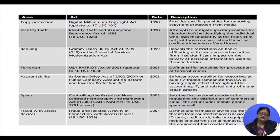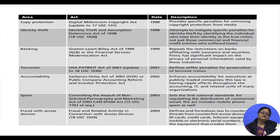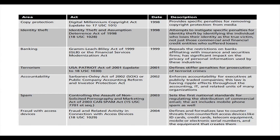Pornography involves exploiting human sexuality to generate revenue. They also use deceptive marketing strategies such as mouse trapping. Publishing and transmitting such material is illegal under the IT Act 2000. Paedophilia is similar to pornography but involves children as objects of sex.